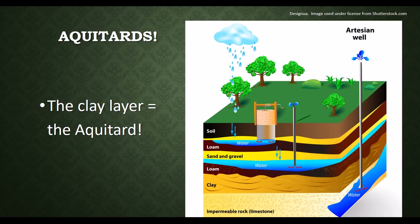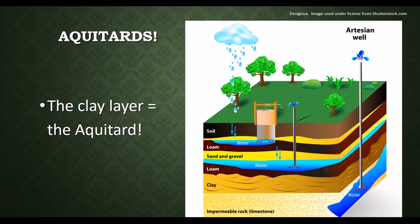Sometimes, aquifers are covered over by a layer of clay or stone that is impermeable, which means that water can't move through it. We call this layer of clay or stone an aquitard. This is important because aquitards change how water flows into the aquifer. For example, an aquifer covered over by an aquitard may not be able to refill as quickly. Sometimes, heat and pressure can force the water up through to the surface, creating natural springs. These are known as artesian wells.